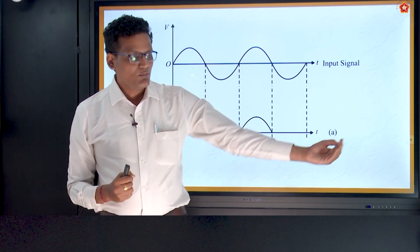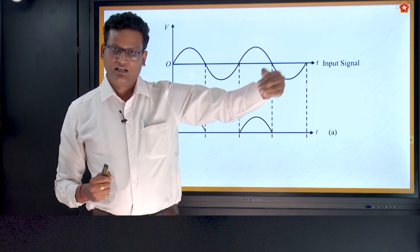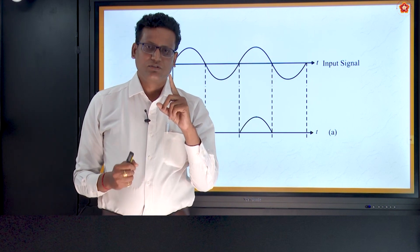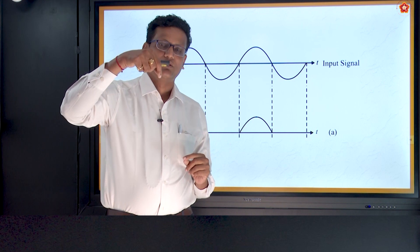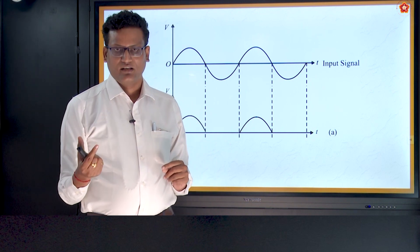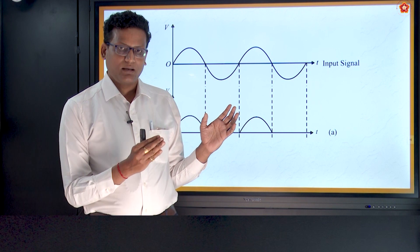When complete rectification has to happen, what we do naturally? We bring more satsangh into society. So one diode is not sufficient. We will connect one more diode then it is called as full wave rectifier. So let us summarize what happens here.